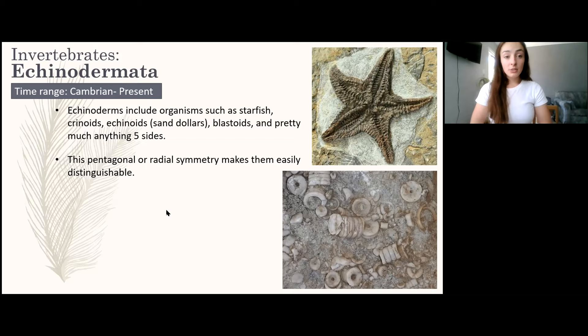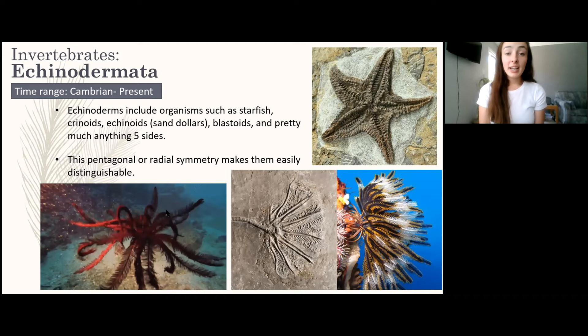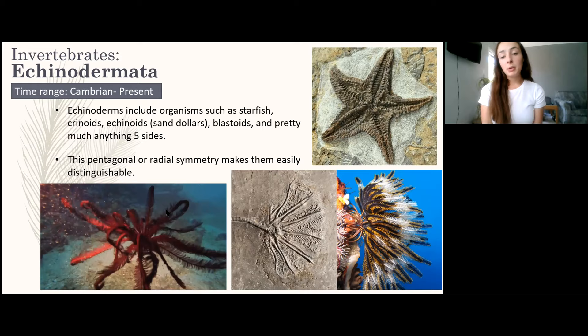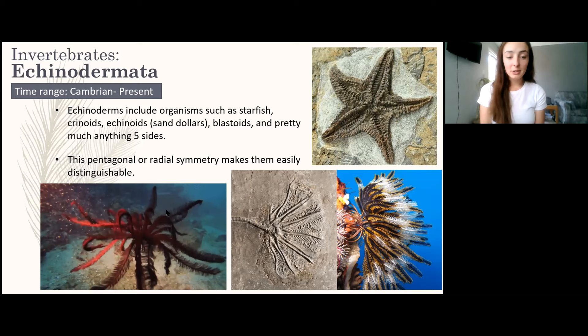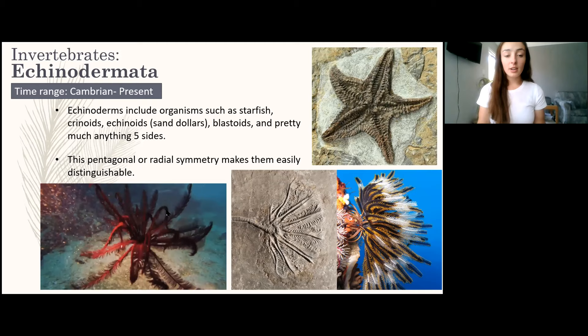The next phylum is Echinodermata, which has been around since the Cambrian and includes starfish, crinoids, echinoids like sand dollars, blastoids, and anything with five-sided pentagonal or radial symmetry, making them easily distinguishable. Crinoids in the fossil record typically appear as just their stem parts; their heads, being more feathery and less hard, rarely preserve. Modern crinoids look beautiful with their full heads visible, but in the rock record only their hard stems tend to survive.